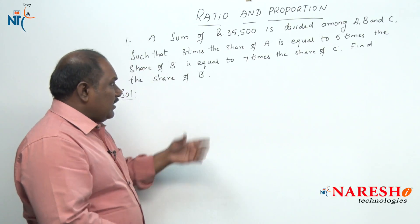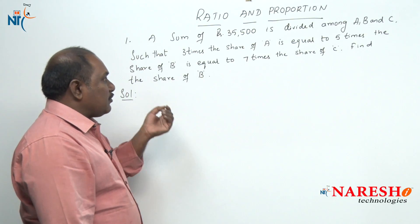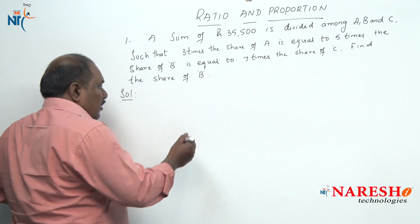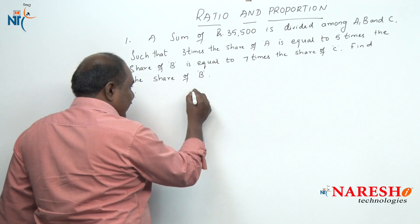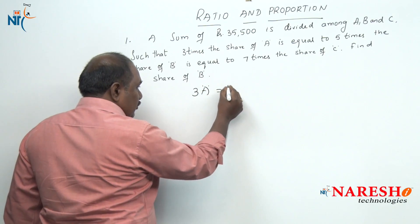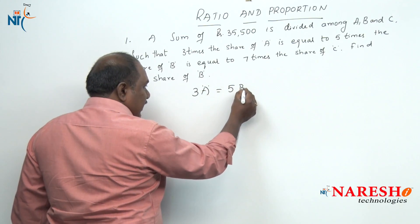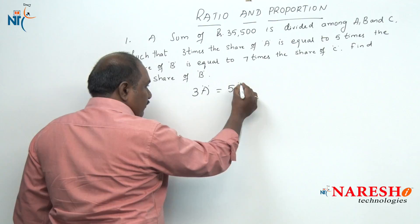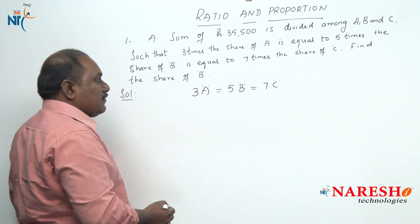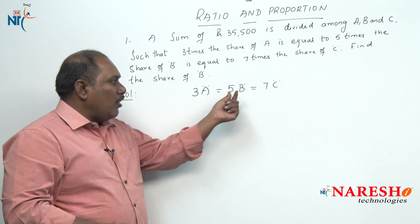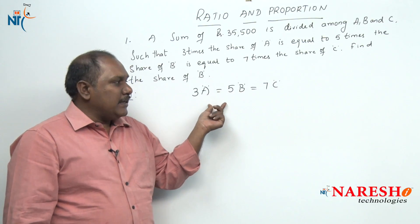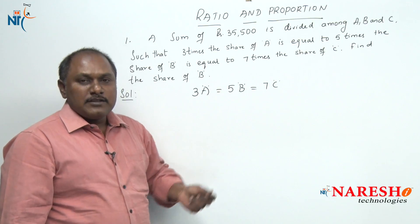There is some money, 35,500, which has to be divided among A, B and C. How should the money be divided: 3 times the share of A equals 5 times the share of B equals 7 times the share of C, and we want B's share. There are 2 different ways of solving this particular problem.